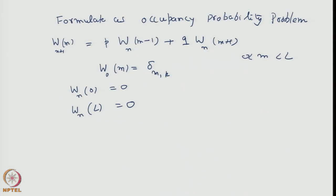This problem can be addressed by an out-of-the-box approach. We introduce a novel probability: F_k^0, the probability that ultimately the gambler contacts 0 for the first time — that is, without having contacted L — starting from point k. This is the eventual, ultimate ruinage probability. Correspondingly, we define F_k^L, the ultimate winning probability starting from k.